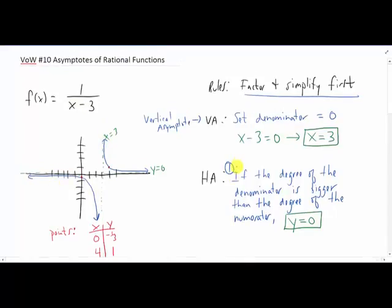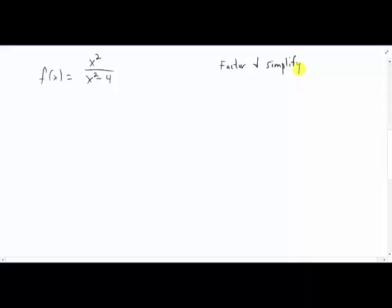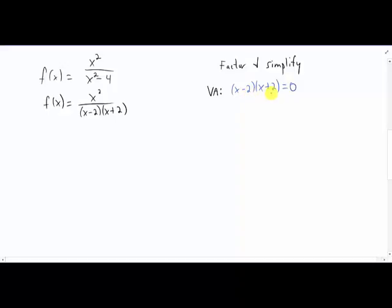Let's try a harder example where there's a different type of horizontal asymptote. First step is going to be to factor and simplify. The numerator is just going to stay as x squared. The denominator can be factored — it's a difference of squares: x minus two, x plus two. Nothing can be canceled here, so we're going to go ahead and find our vertical asymptotes by setting the denominator equal to zero. That gives us x equals two for the first factor and x equals negative two for the second factor. So I have a vertical asymptote at x equals two and another at x equals negative two.